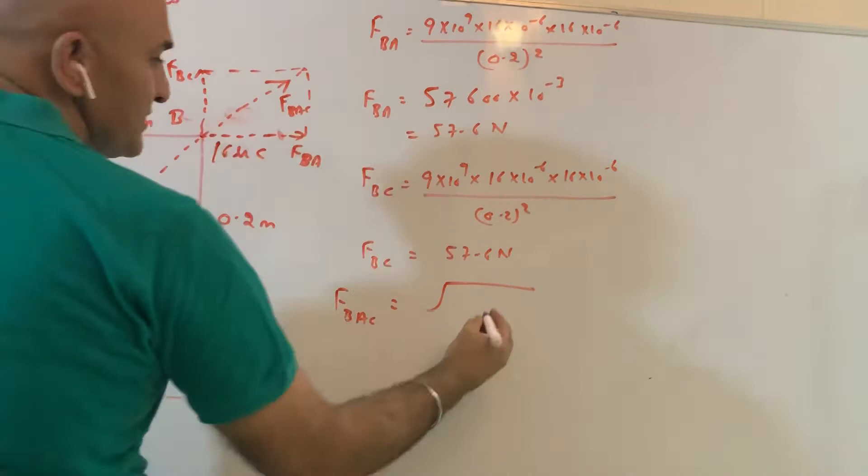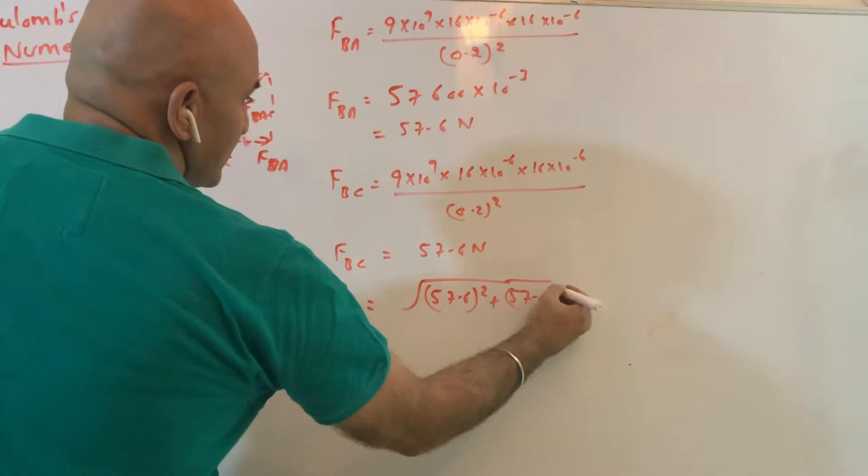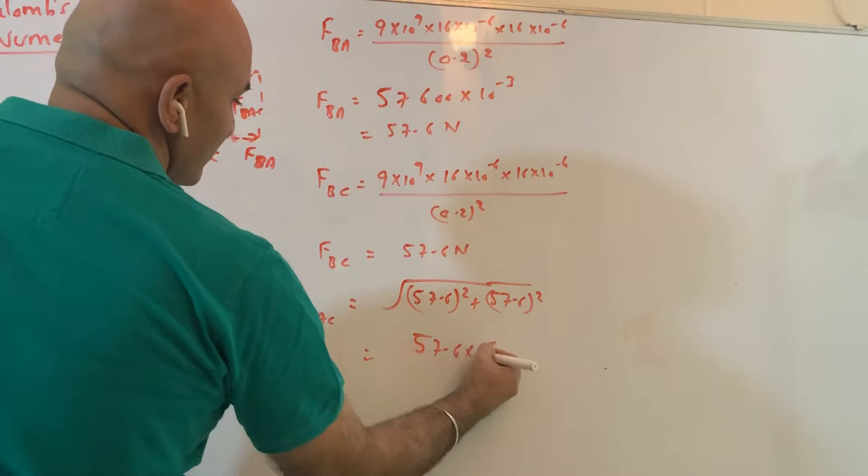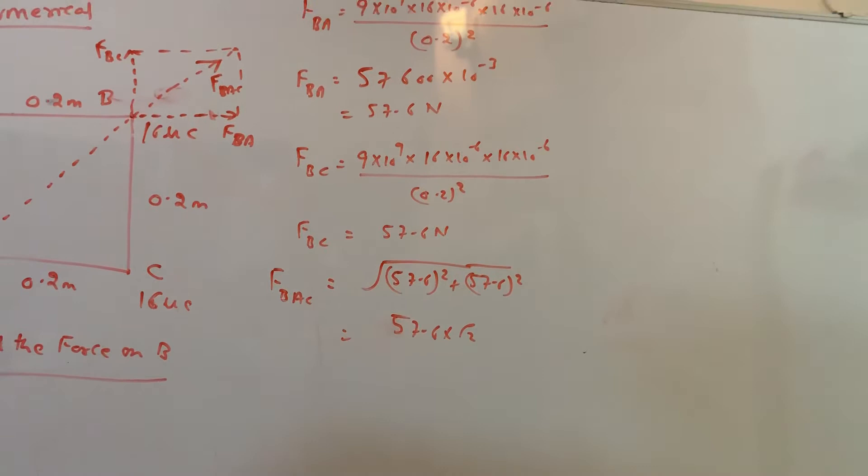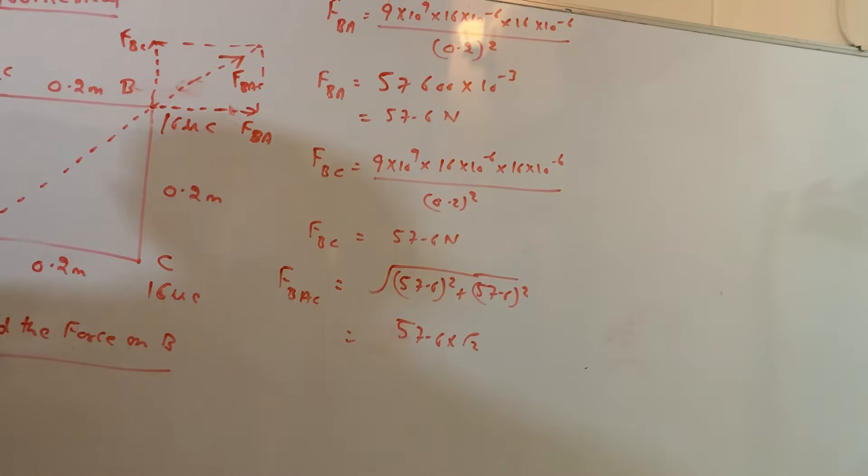Now these are acting at 90 degree angles to each other. So this will be just 57.6 square plus 57.6 square. This will come out to be 57.6 into root 2. This will come out to be equal to 57.6 into root 2. So this will come out to be 81.4 newtons.